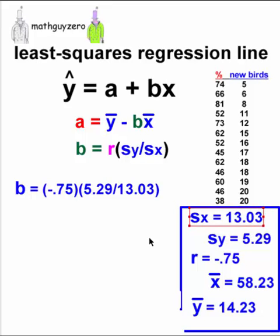Let's do a little bit of math. And so we get a value for b, negative 0.304.